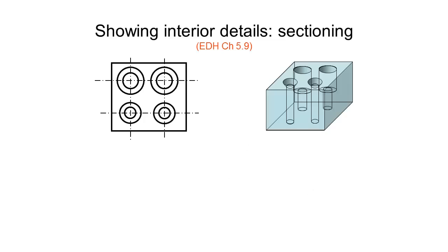The next thing we're going to look at is interior details. If we have this object which has two countersunk holes at the front here and two counterbore holes at the back, we have the top view of that object and we want to know how do we represent what is happening in the interior of the object.